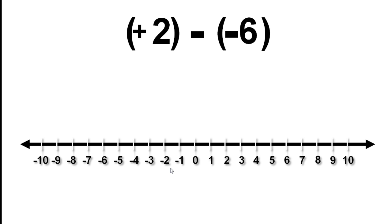First, we put our finger on the number line at the position of the first number in our calculation, positive 2. Next, we look at the operation symbol in our calculation. We are subtracting. Now we look at what we are subtracting. We are going to subtract a negative number.